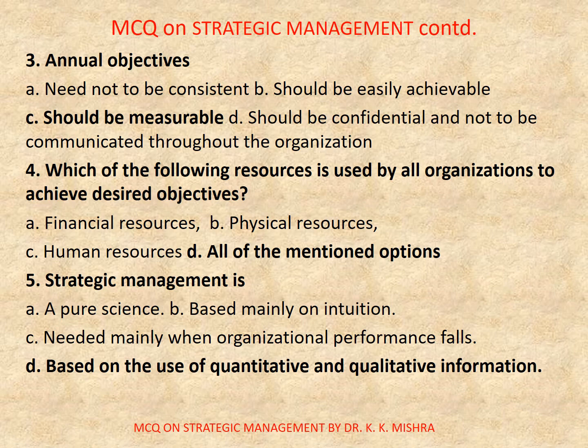Question 5: Strategic management is — A, a pure science; B, based mainly on intuition; C, needed mainly when organizational performance falls; D, based on the use of quantitative and qualitative information. Correct option is D: based on the use of quantitative and qualitative information.